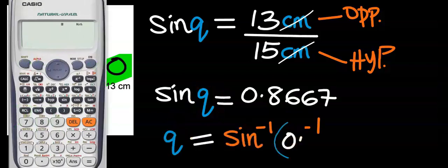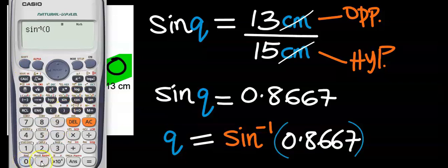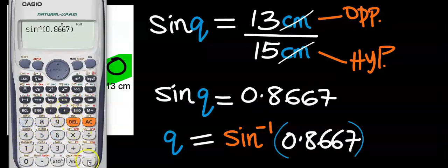Using your calculator, press shift, sine, then inside a bracket put 0.8667. Close the bracket, press the equal sign, and we have 60 degrees.